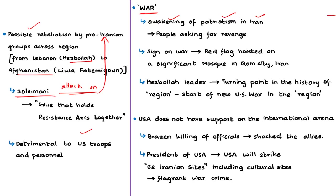Hezbollah's leader also made a statement in support of war, stating that Soleimani's assassination is a turning point in the history of the region — not just the history of Iran or Iraq — and that this attack is the start of a new American war in the region. So we can say there is a possibility of war. The United States also does not have support on the international stage regarding this matter, as its allies were shocked to see the US administration brazenly kill a senior Iranian official and an Iraqi political leader.